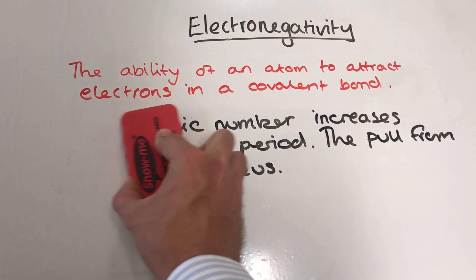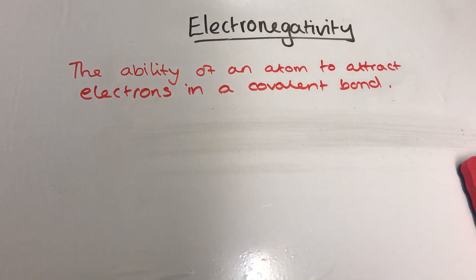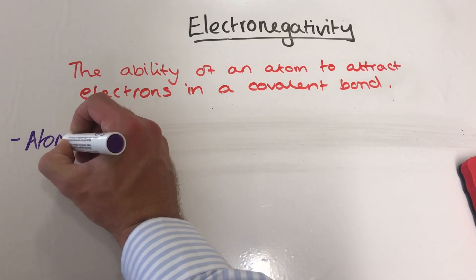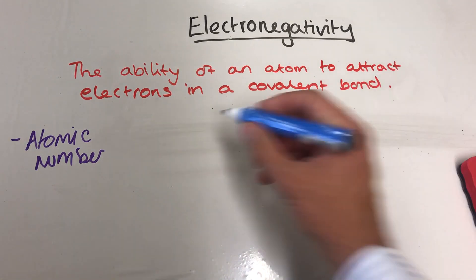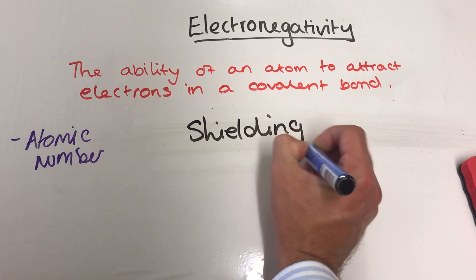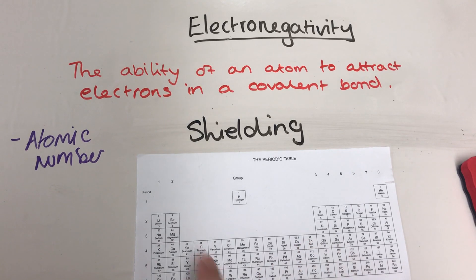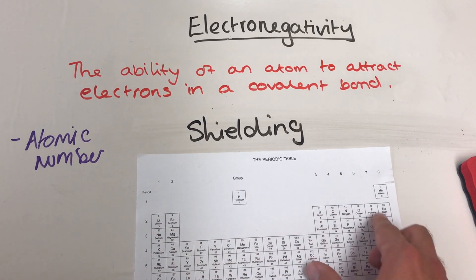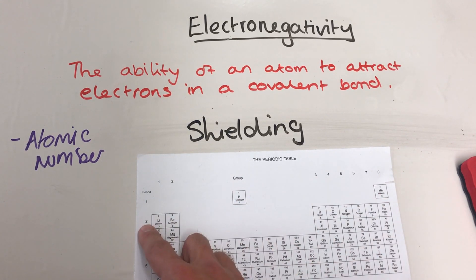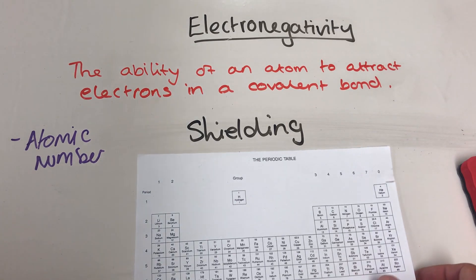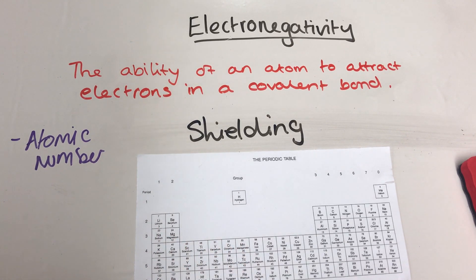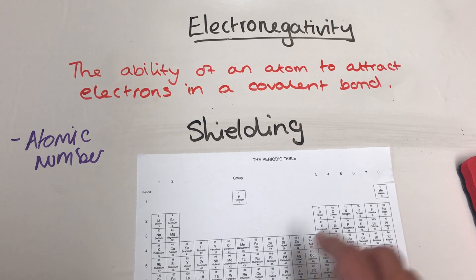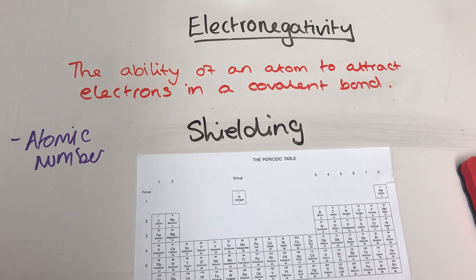The next thing to look at is the amount of shielding that atoms have. Looking at the periodic table again, as long as we stay in the same period there are no extra shells being added. Period one has one shell, period two has two electron shells, period three has three electron shells. Shielding will affect electronegativity. The more shielding you have, the less the electronegativity of that element. As you go down a group, electronegativity tends to decrease because you get more shells, more electrons covering the protons in the nucleus, and ultimately more shielding of the nucleus, so you get less of a pull from the nucleus.